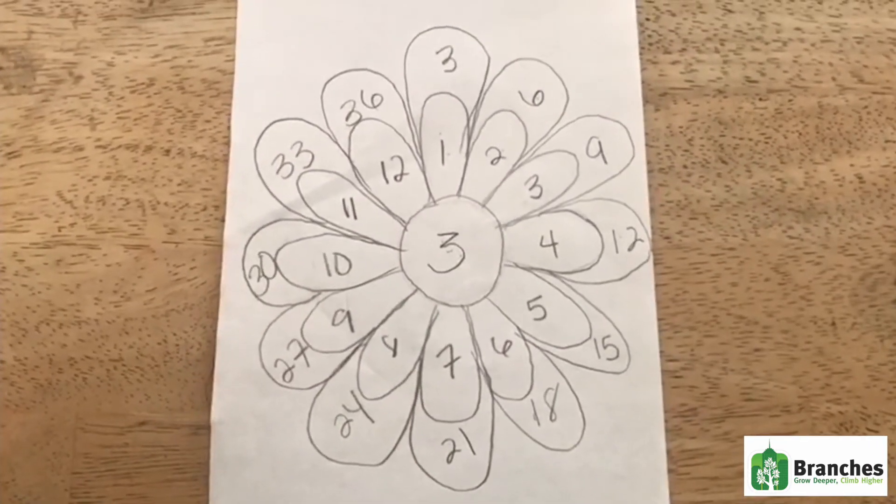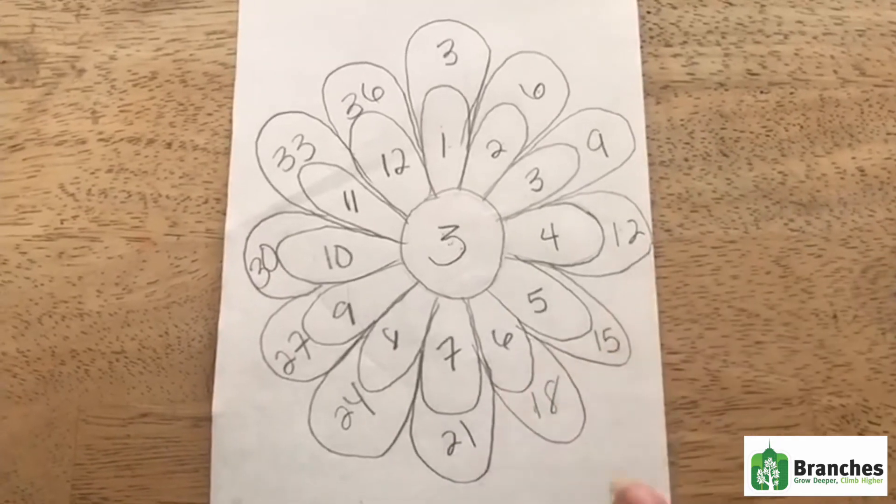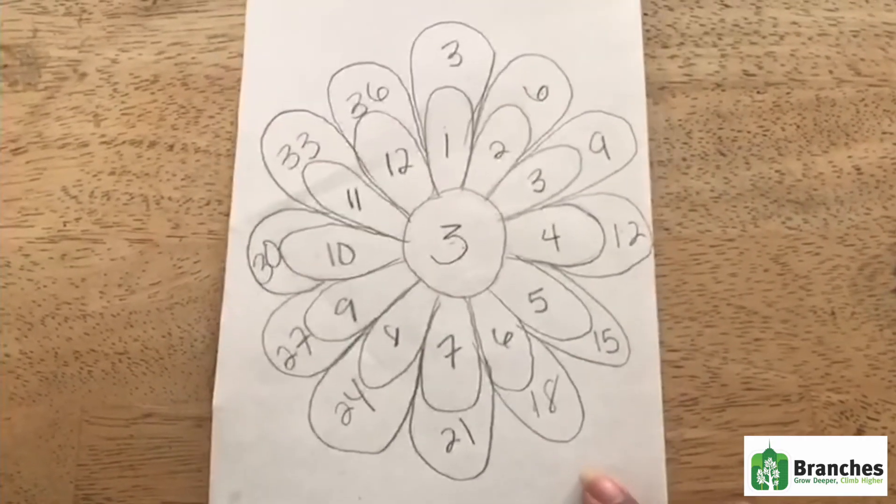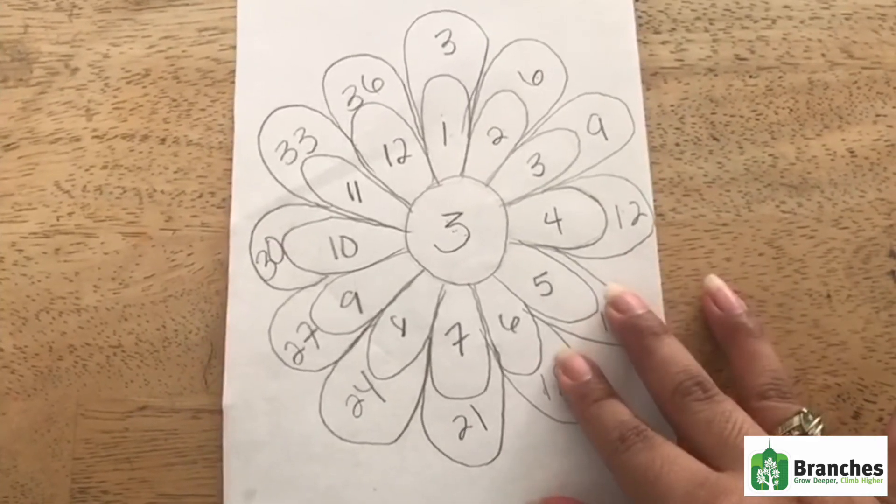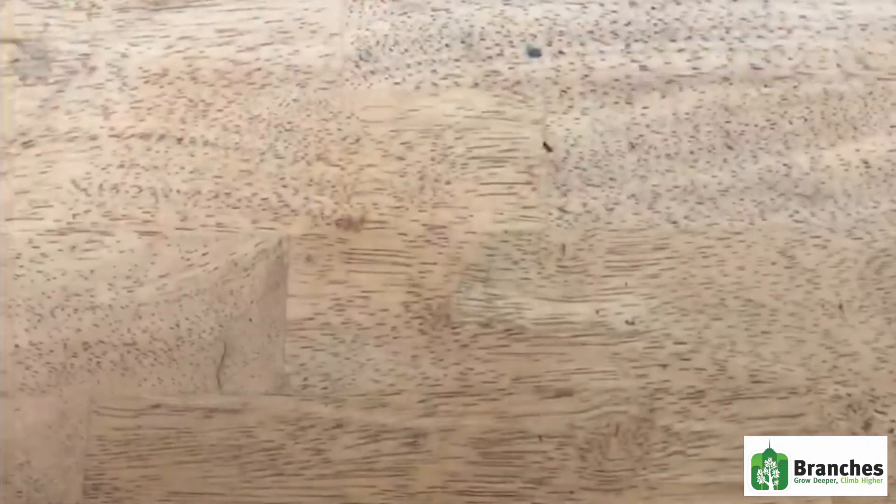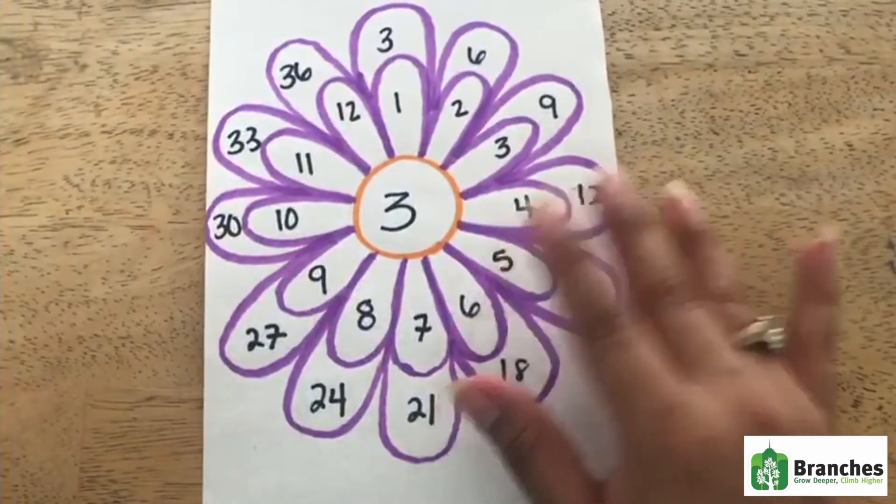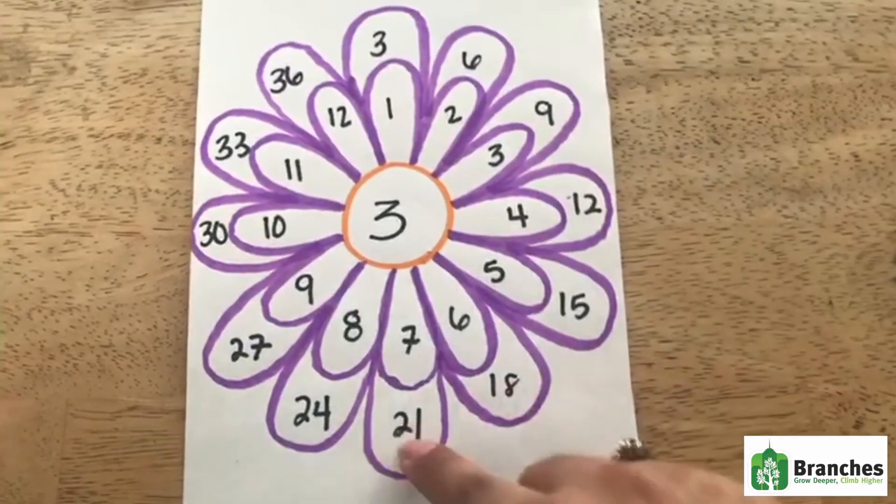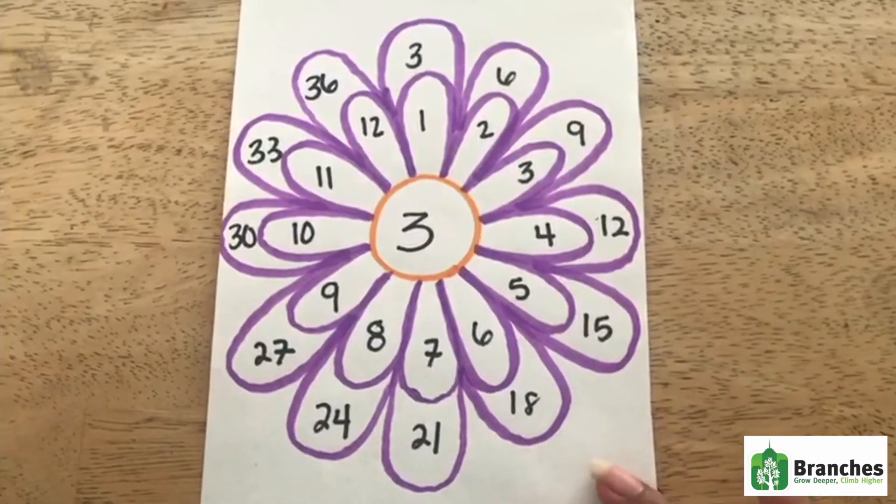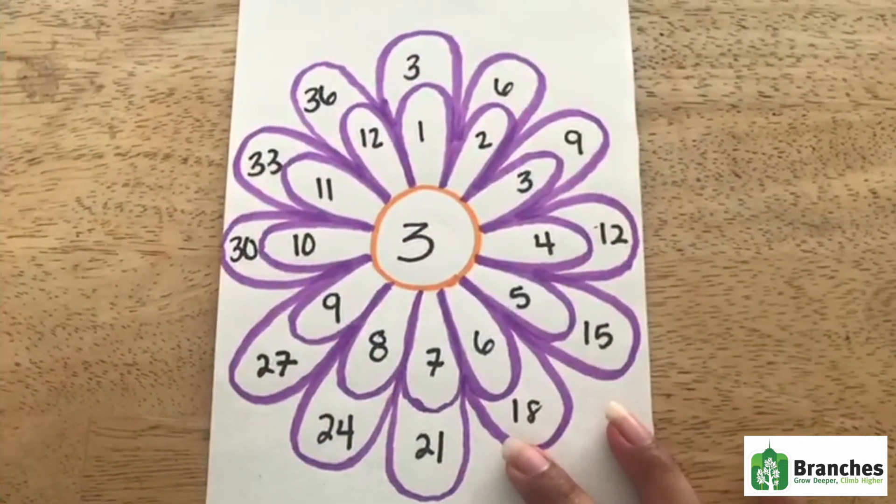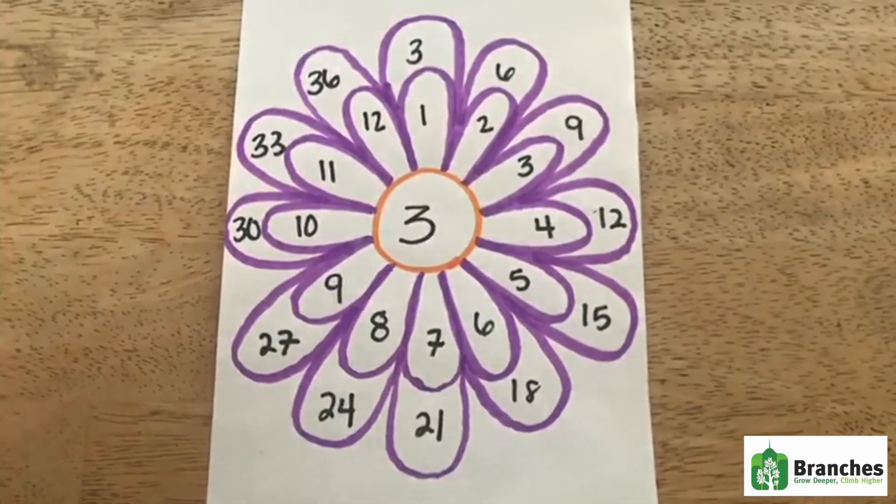Now that we finished our three times tables, it should look like this. And we can start coloring it so that it can look something like this. You can either choose to shade it in, you can do whatever you'd like. I just chose to leave it like that and you can do that with every single timetable.